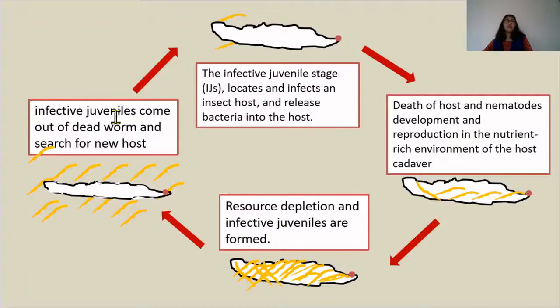That is how they kill the larvae. The presence of bacteria inside these nematodes kills the larvae, and both the nematode and bacteria act together to destroy the larvae. This concludes our discussion of Jawar stem borer. Thank you everyone.